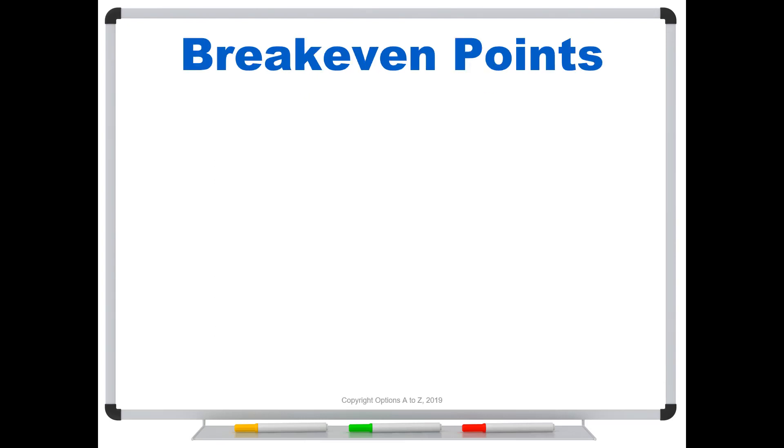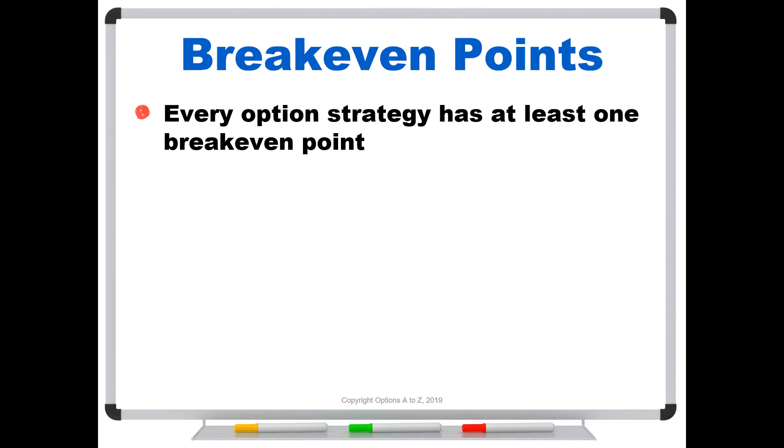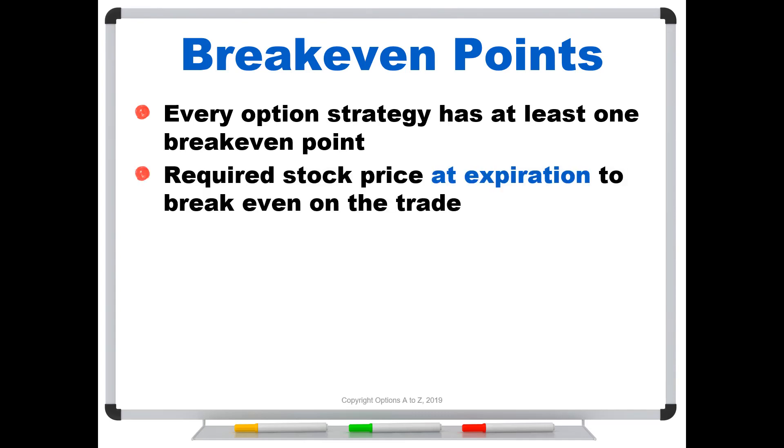First of all, what are break-even points? Well, every option strategy has at least one break-even point. Some more advanced ones will have multiples, two or three break-evens, but you got to have at least one. And that is the required stock price at expiration to break even on the trade. In other words, you didn't make money, you didn't lose. Now, technically, there are an infinite number of break-even points. You've got one for today, one for next week, and so on. Every moment in time, there is a stock price where you need for that strategy to break even. But generally, when people talk about a strategy's break-even points, they mean at expiration. So those are kind of the limits there at expiration. So that's what I'm going to use for this video.